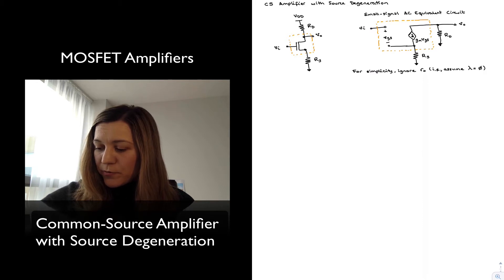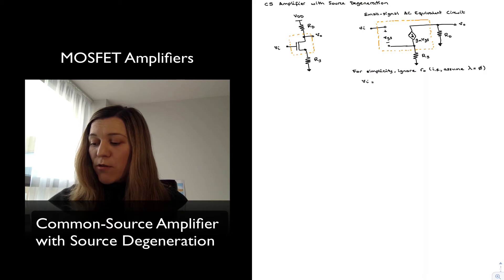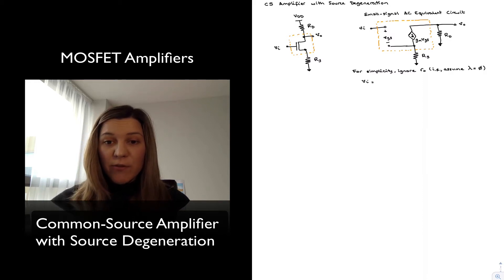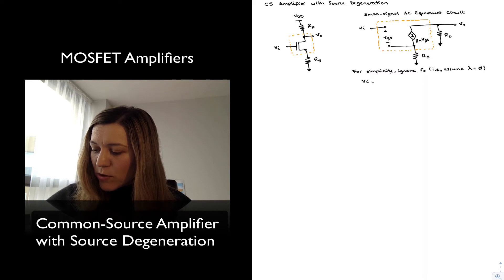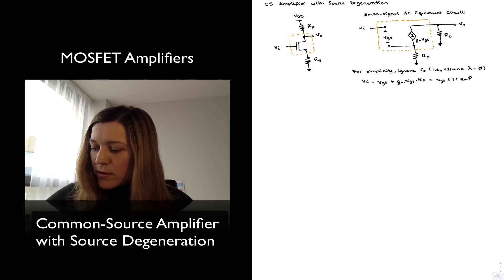My input voltage in this case I can see is going to be equal to VGS plus the voltage drop across the RS resistor, which is going to be the current flowing through that resistor times the resistance. The current flowing through RS we can see is going to be GM times VGS coming from that current source. And so VIN is equal to VGS plus GM VGS times RS, which I could also rewrite as VGS times 1 plus GM RS.